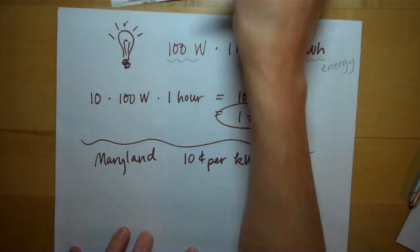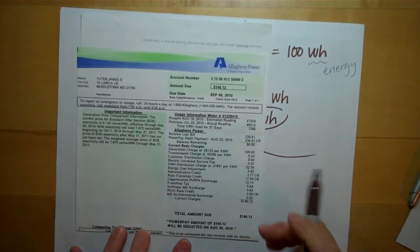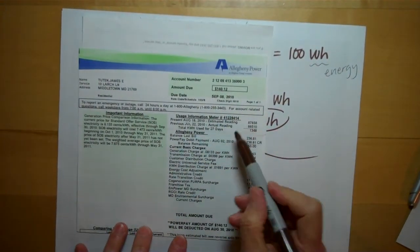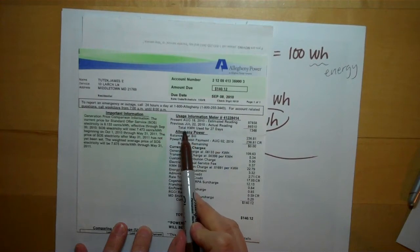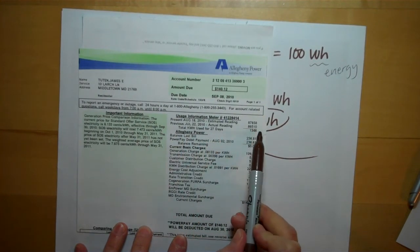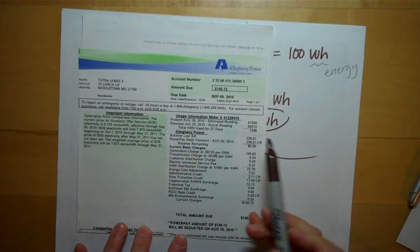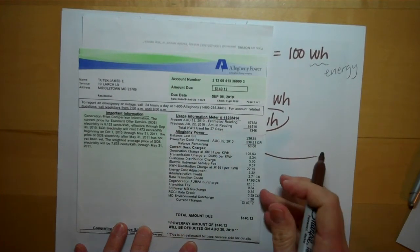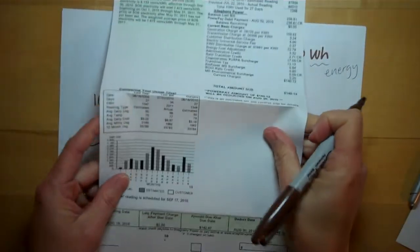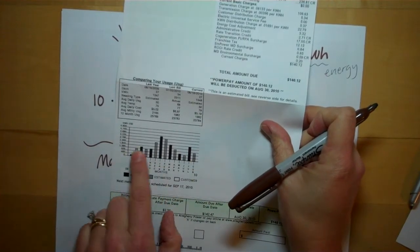If you look at this old electricity bill of mine from Allegheny Power, you can see it has here, maybe you can't read it, it says total kilowatt-hours used. So it counts up my total kilowatt-hours used and charges me based on that. And it gives me a rundown of when I've used more or less.